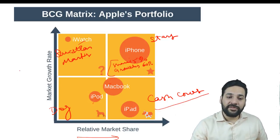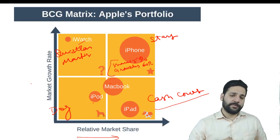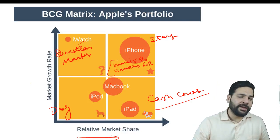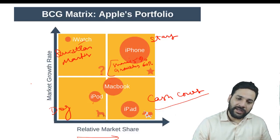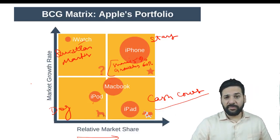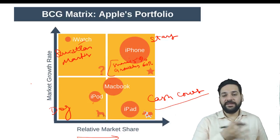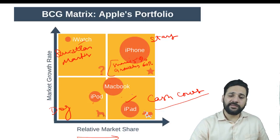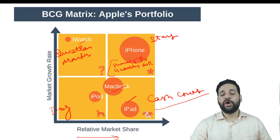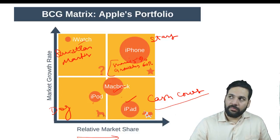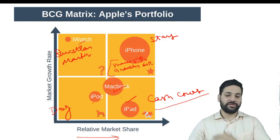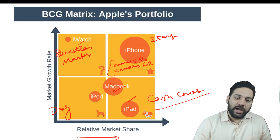Cash cows are products with low market growth rate but high relative market share. The tablet market is not growing at a fast pace — the growth rate is low — but iPad has the majority of market share. The same applies to MacBooks. The company is making profits but that product is not going to grow much. The company need not invest much money into cash cows but can generate a lot of cash from them — that's why it is called a cash cow: milk your cash cow.